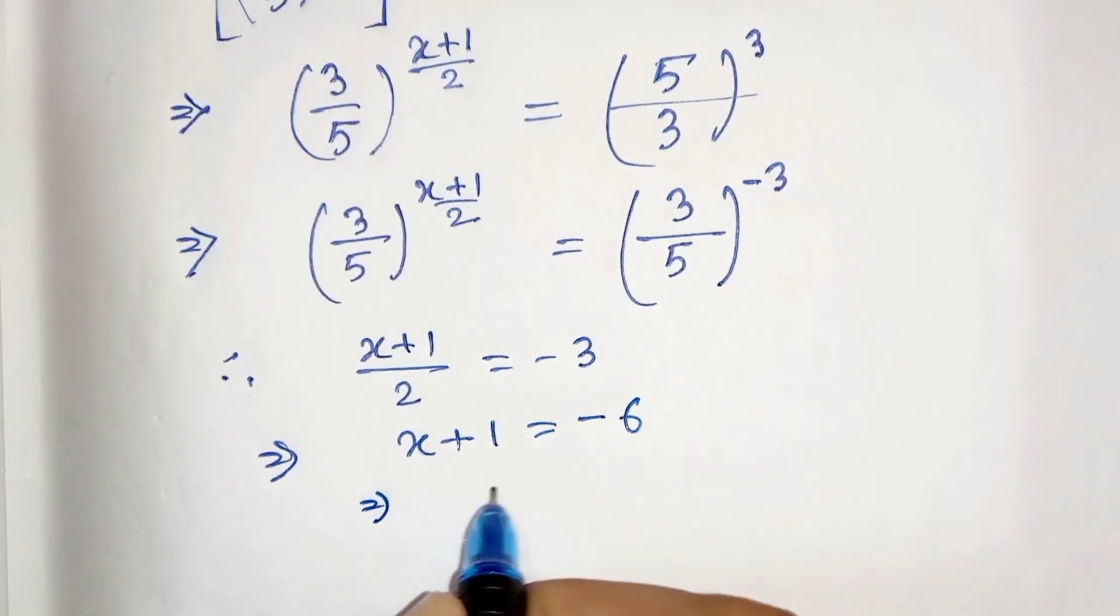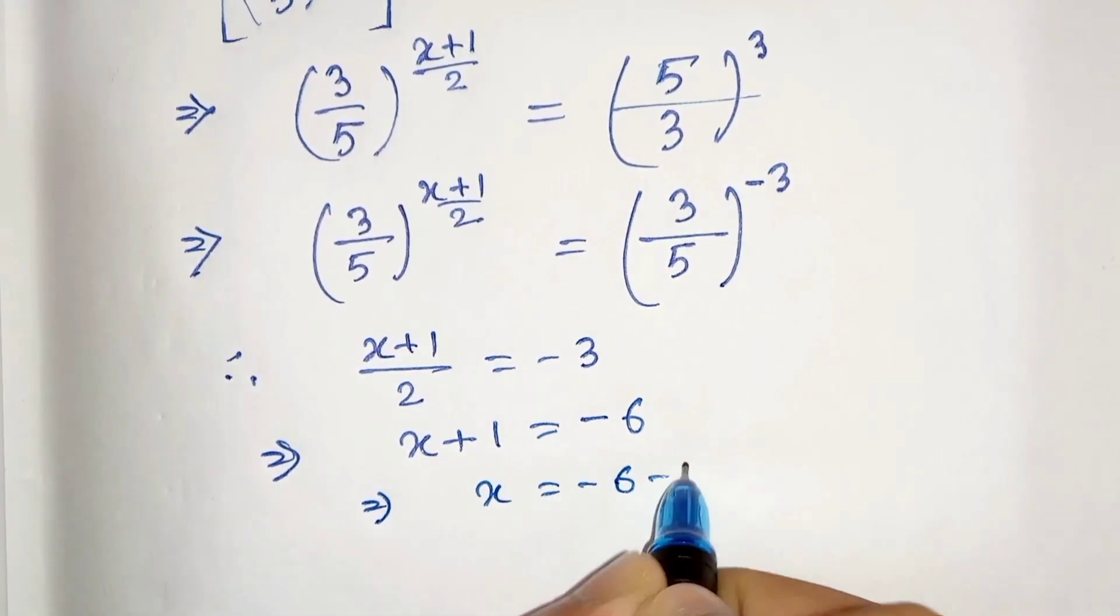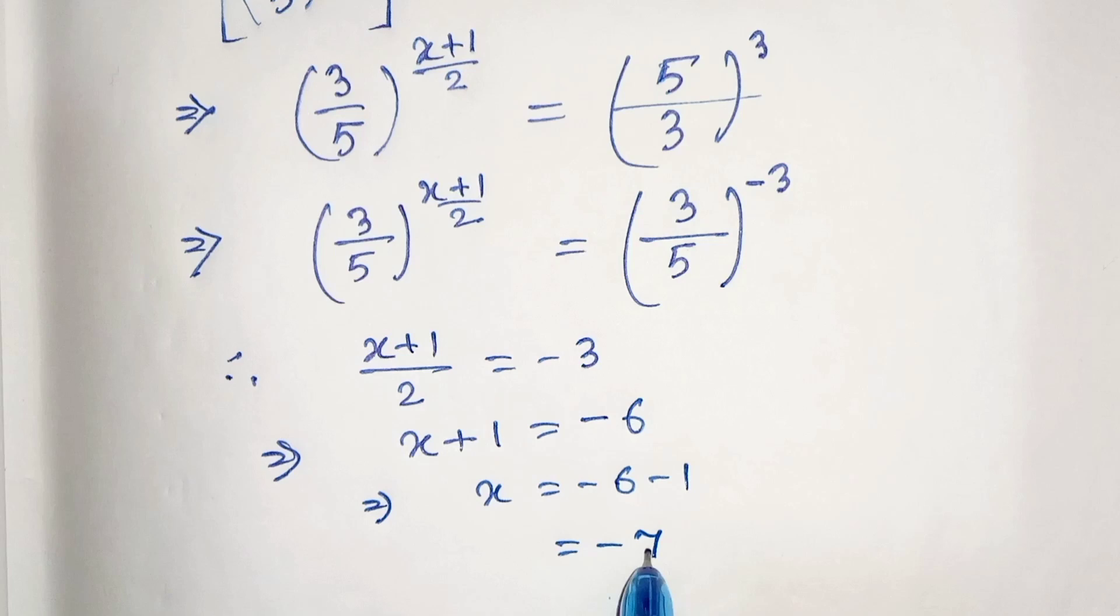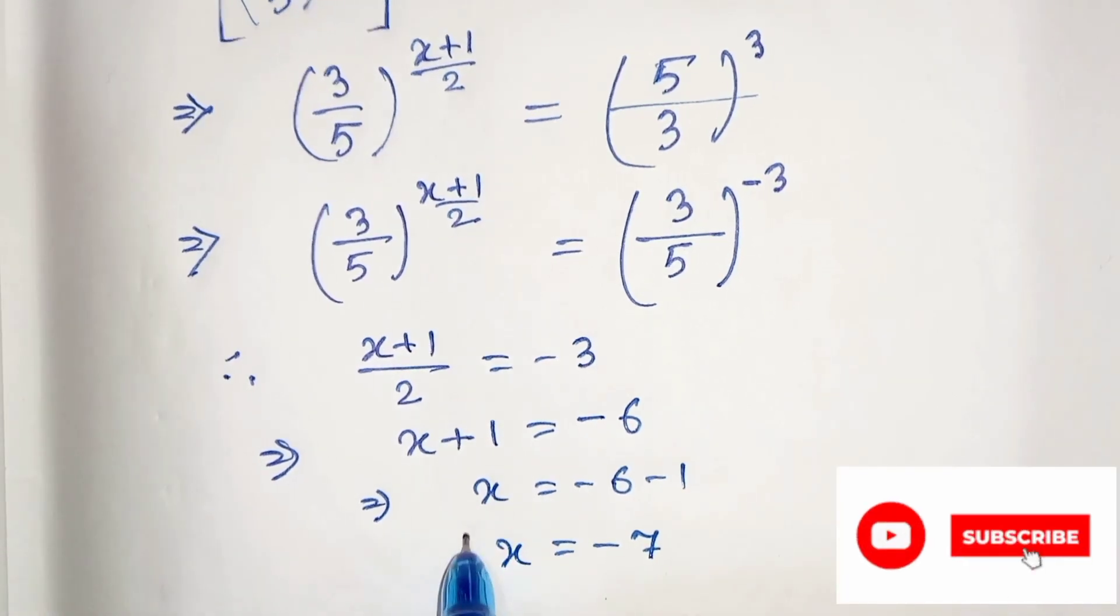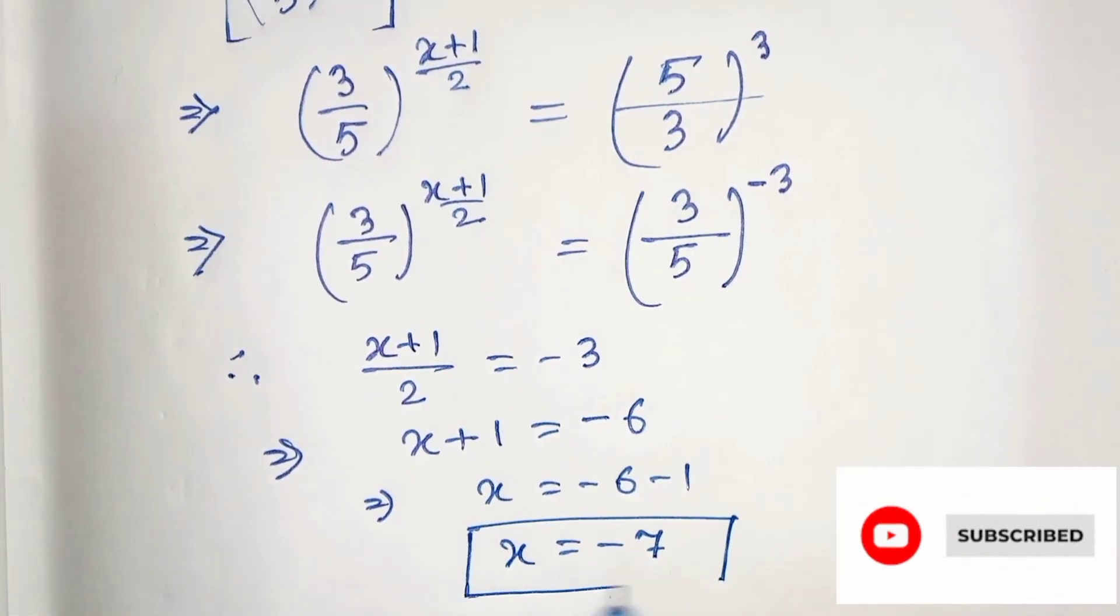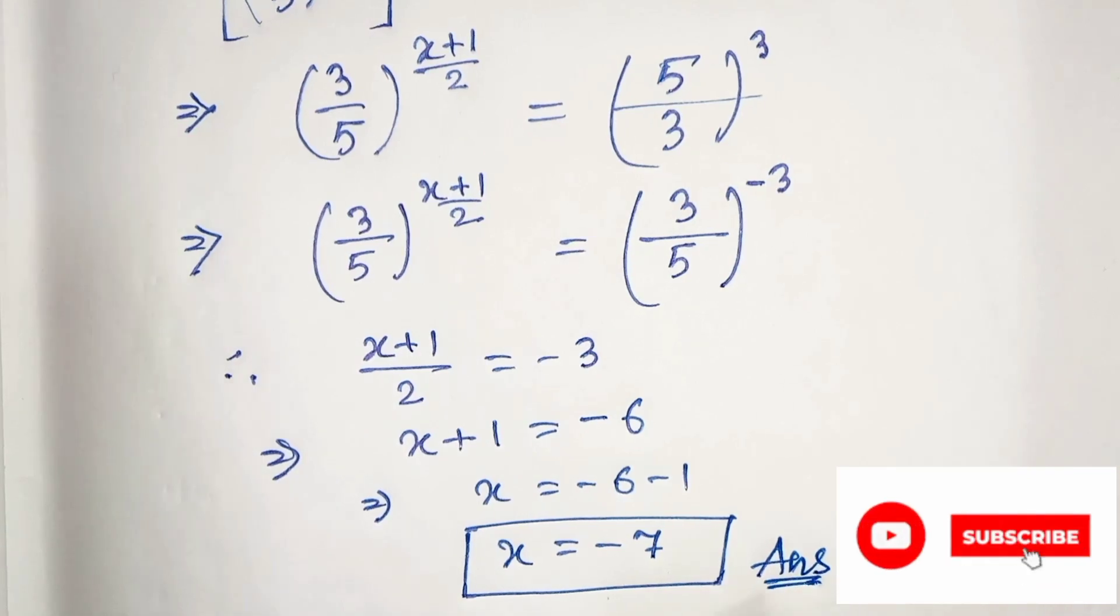In the next step, x equals minus 6 minus 1, which is minus 7. So our solution is x equals minus 7. Thanks for watching.